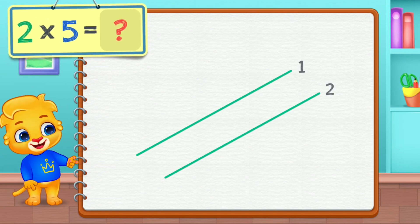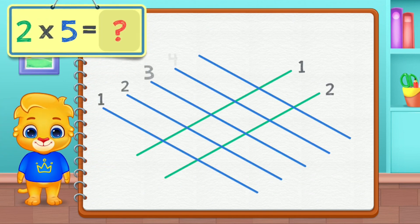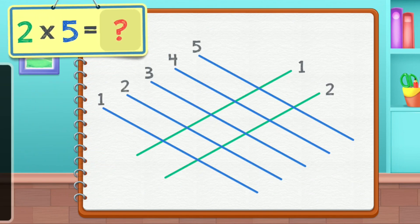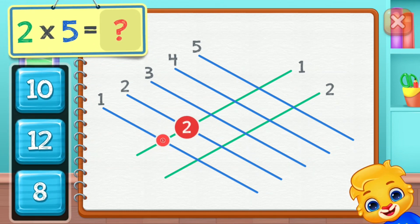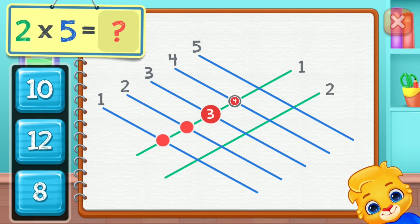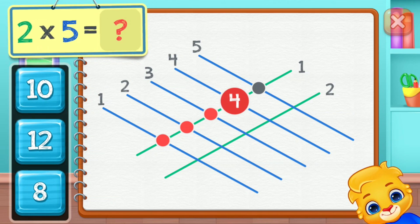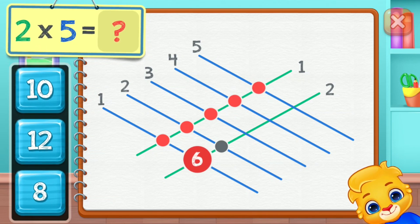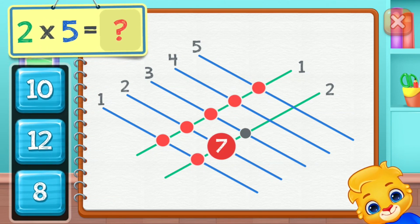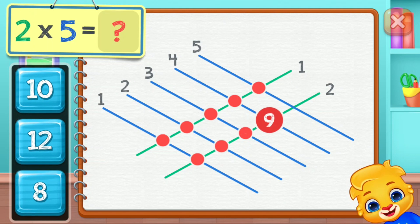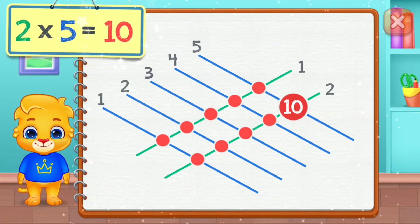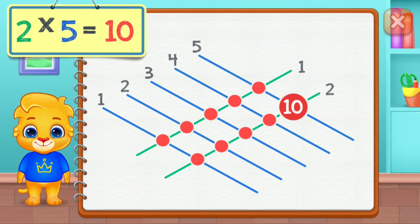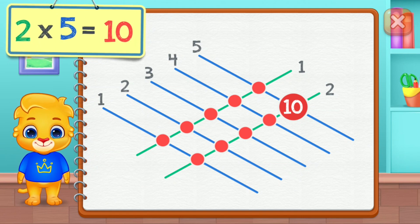Two times five equals... one, two, three, four, five, six, seven, eight, nine, ten. Two times five equals ten.